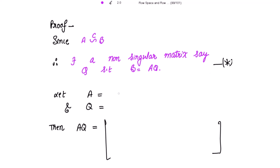Let A be of the form a_ij of type m by n, which can be written in column format as c1, c2, up to cn, because the number of columns is n. And let Q be of the form q_ij of format n by n.